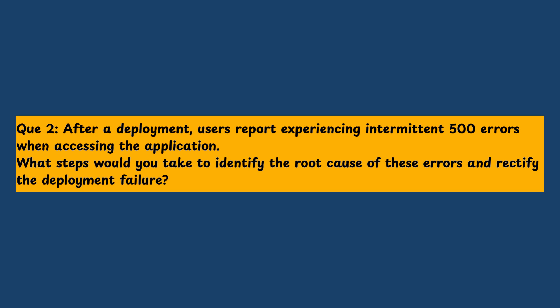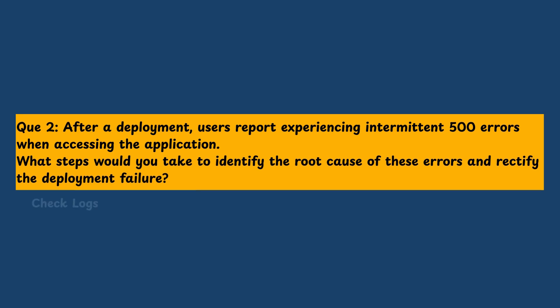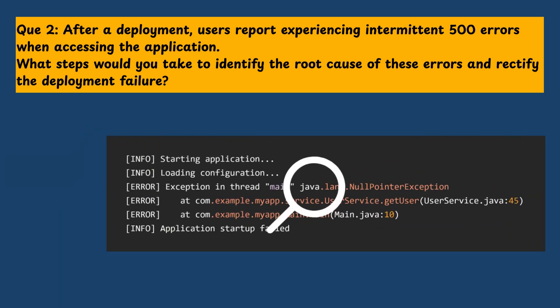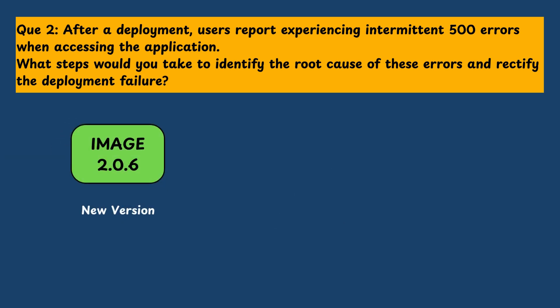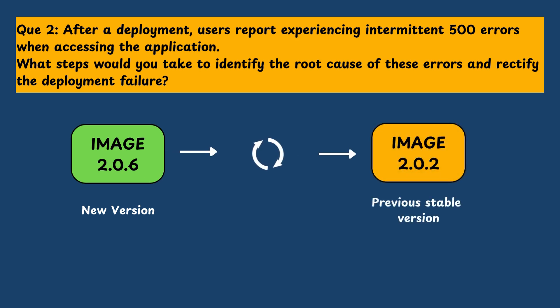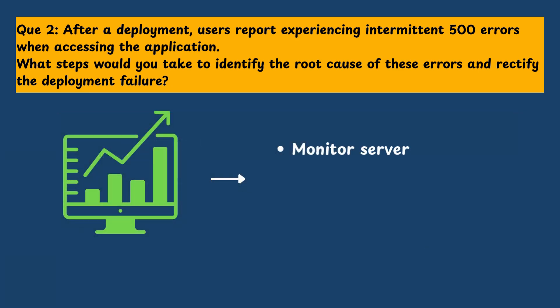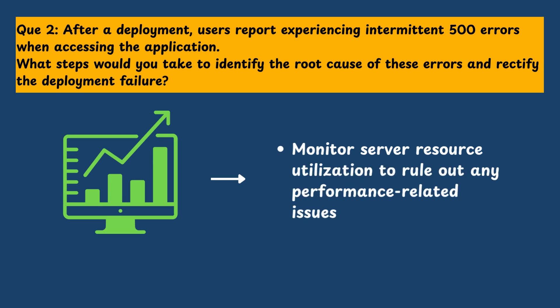Question 2: After deployment, users report experiencing intermittent 500 errors when accessing the application. What steps would you take to identify the root cause and rectify the deployment failure? I would start by examining the application logs to pinpoint the source of errors. If the errors are related to application code, I would roll back the deployment to the previous stable version and conduct a thorough code review to identify and fix the issue. Additionally, I would monitor server resource utilization to rule out any performance-related issues.